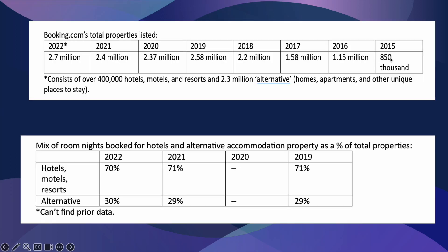Looking at the number of properties listed on their platform over time: from 850,000 properties listed in 2015 to 2.7 million in 2022. These properties consist of 400,000 hotels, motels, and resorts, and 2.3 million listed as alternative, which includes homes, apartments, and other unique places to stay. Interestingly, even though there are only 400,000 hotels listed in total, that segment comprises 70% of their room night mix, meaning most of their reservations are hotel reservations and not homes and apartment listings. I'll explain why this is interesting a little bit later.